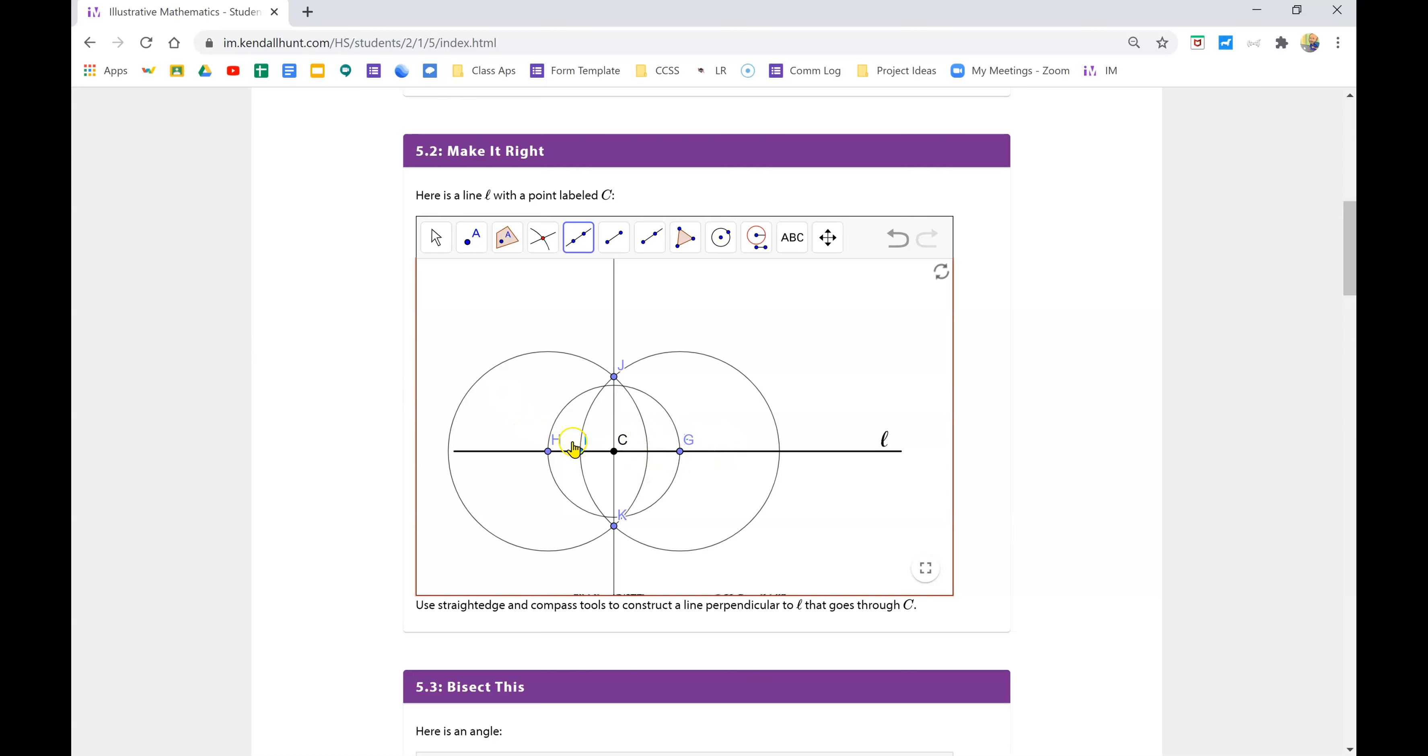So really quickly to review: start by drawing a circle that creates two points on the line that are the same distance away from point C. Then you draw one circle centered at one of the points. And then you draw the same circle centered at the other point and figure out where those two circles cross. That makes the perpendicular bisector.